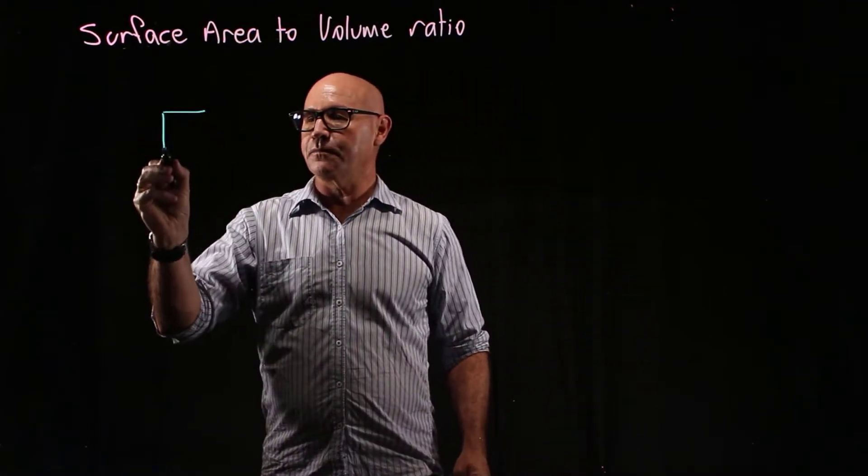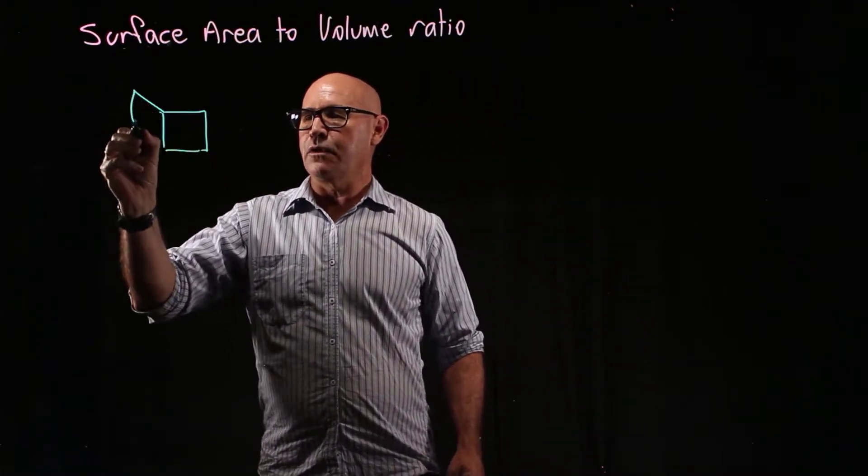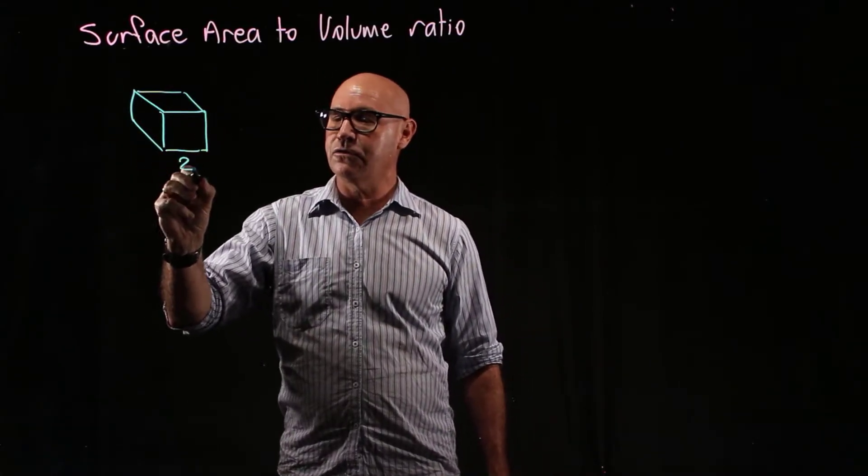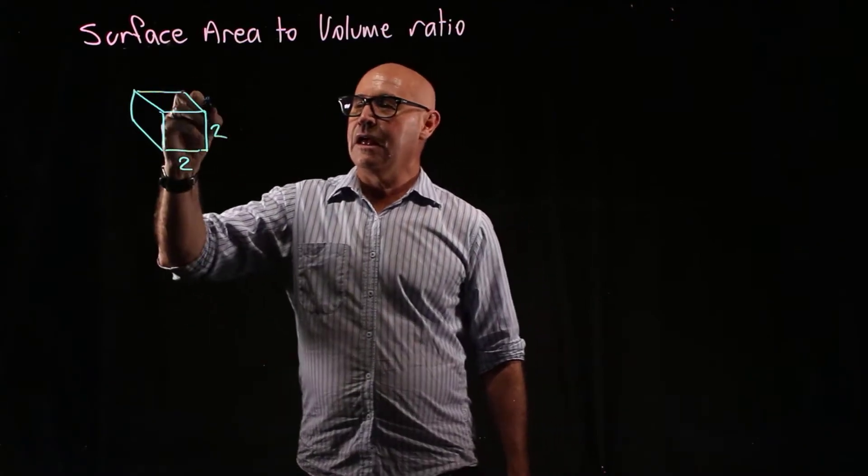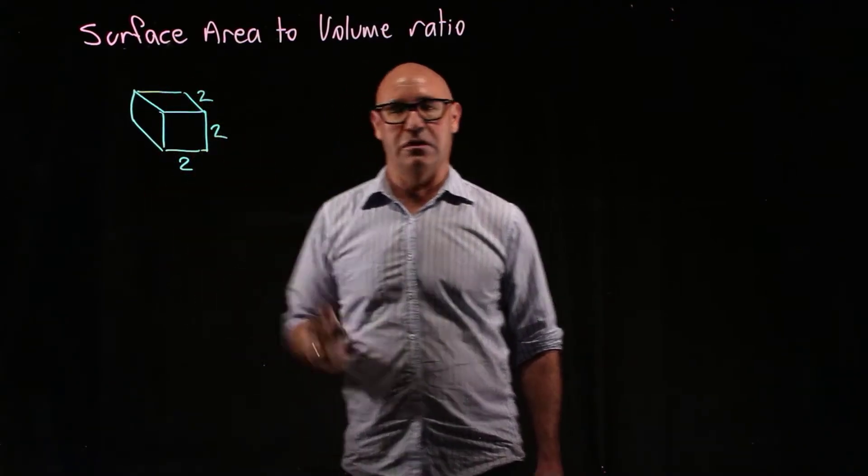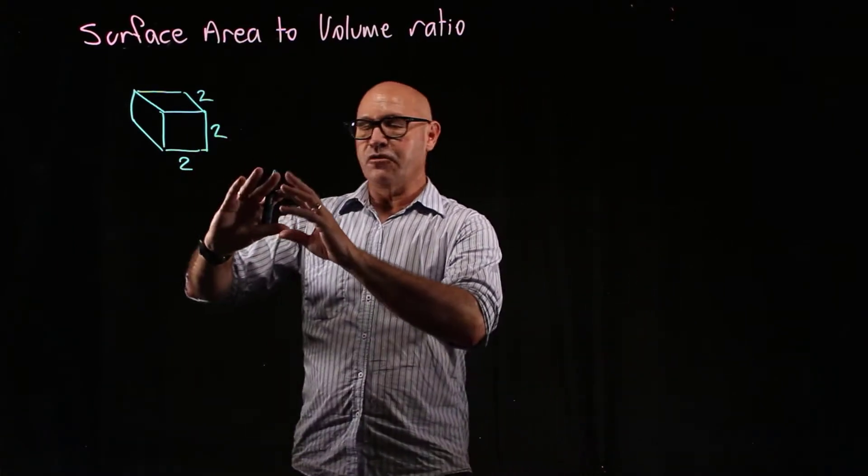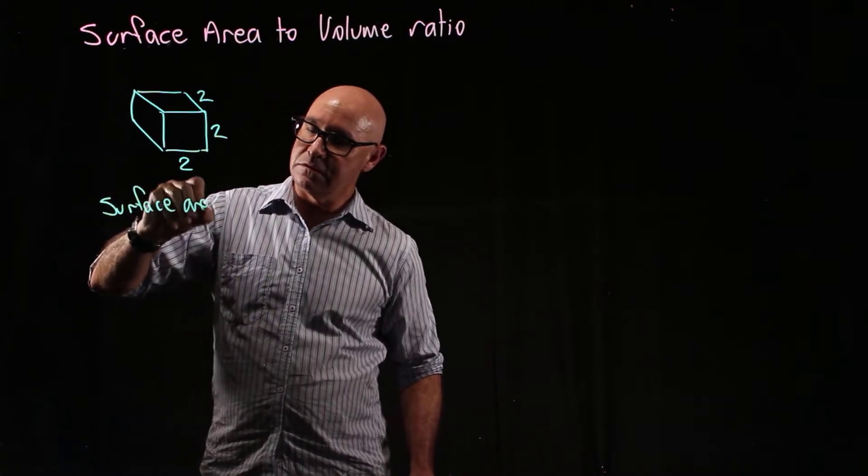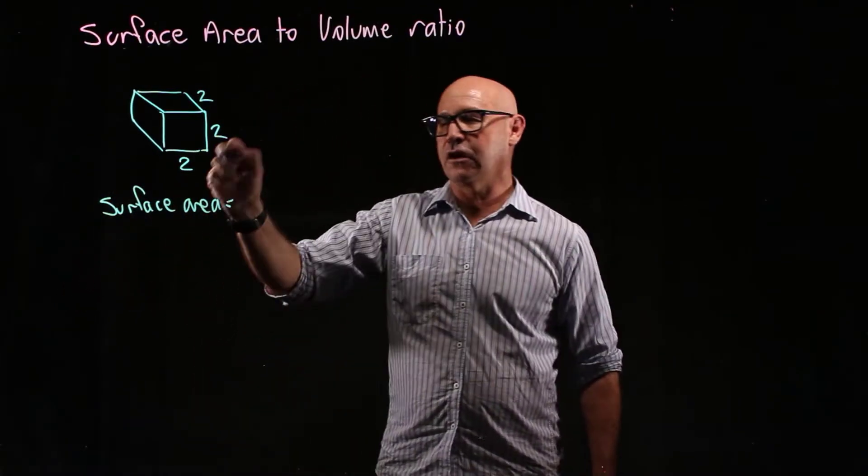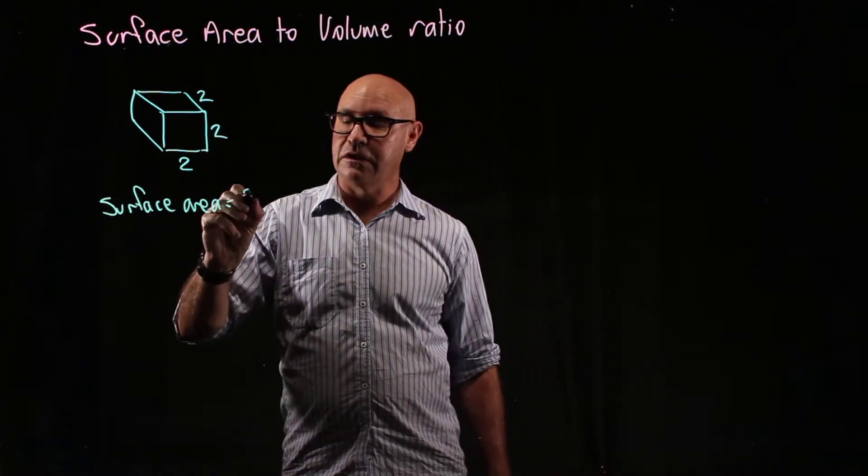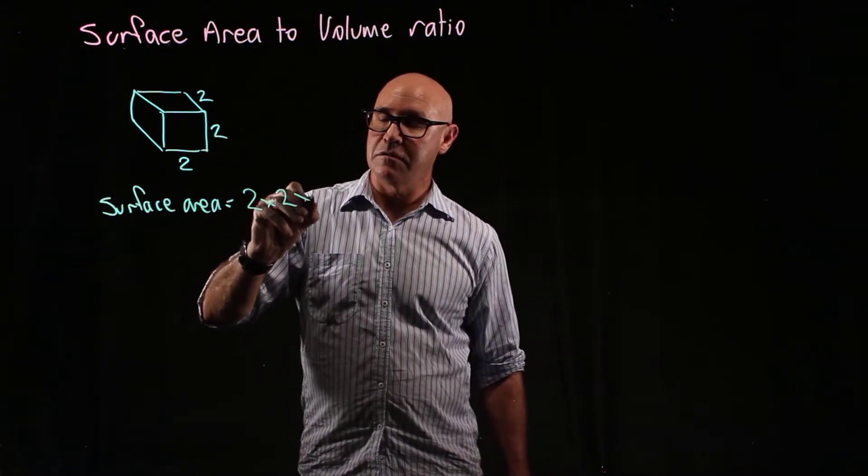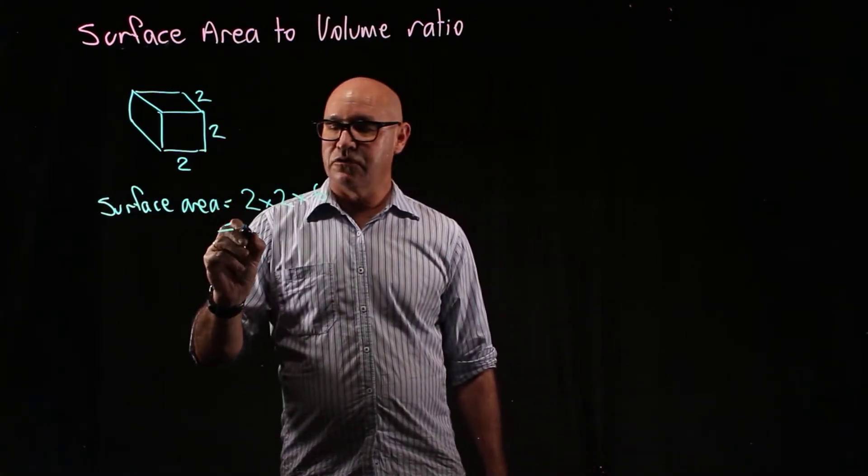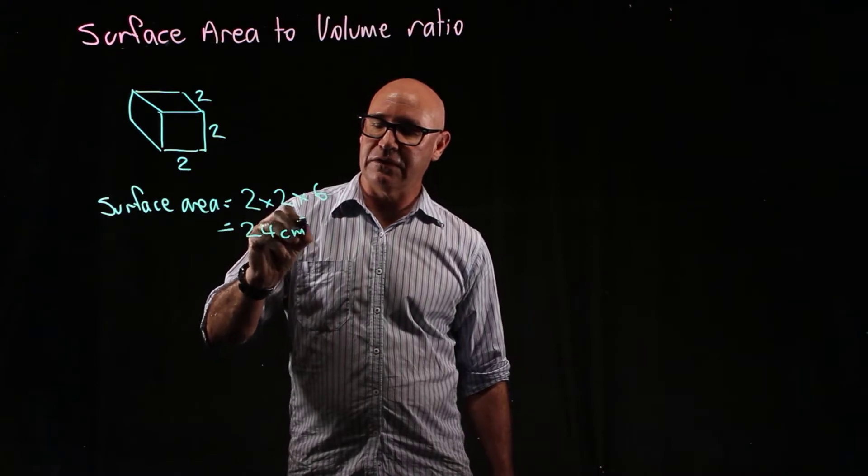Here's a cell, a square cell with sides that are 2 centimeters by 2 centimeters and by 2 centimeters deep. So to work out the surface area, we're going to say side by side times by the number of sides: 2 by 2 by 6, and that's going to be 24 centimeters squared.